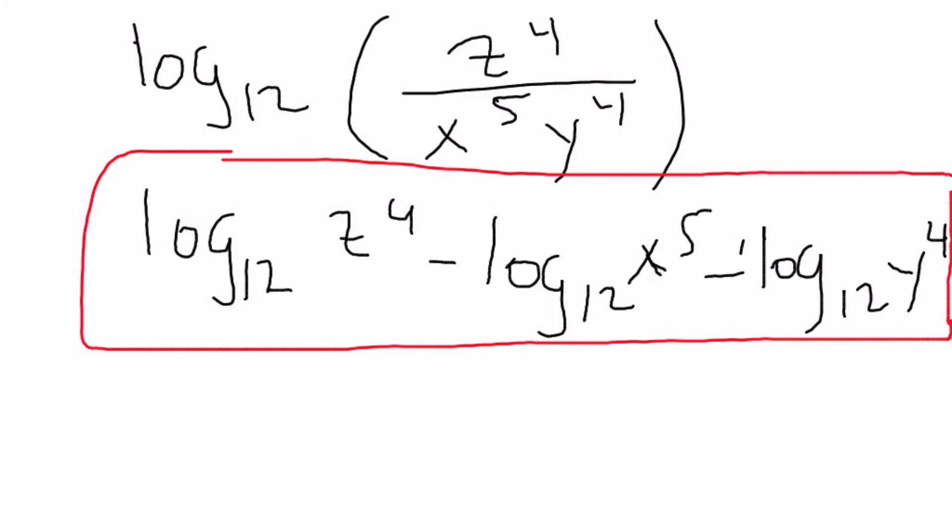And the second, it's basically like the same idea as when we had the multiplication. When we had log base 5 z to the 6th plus log base 6 y to the 4th, we simply just made that into one logarithm. And they were both on top, so it doesn't really matter. So, that's basically what we're doing here.